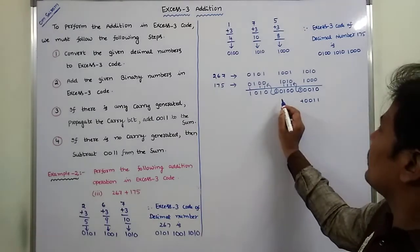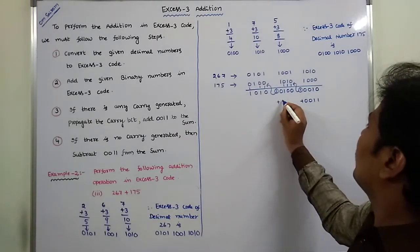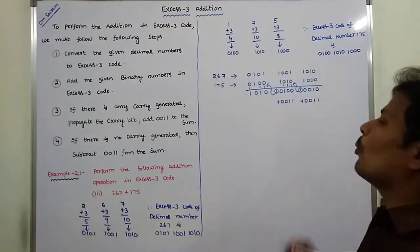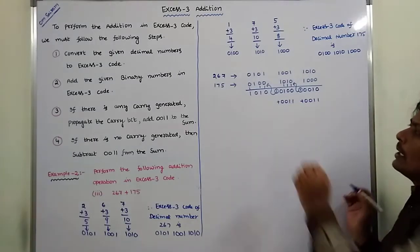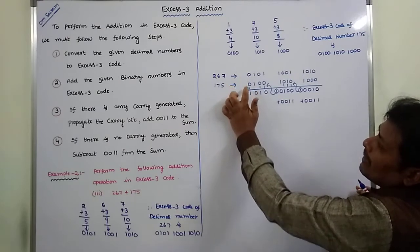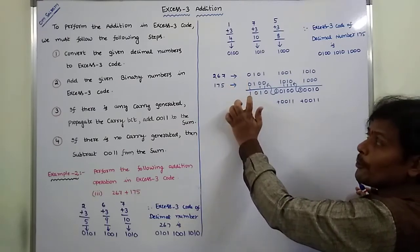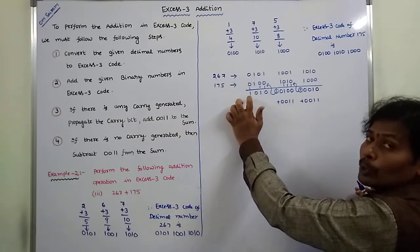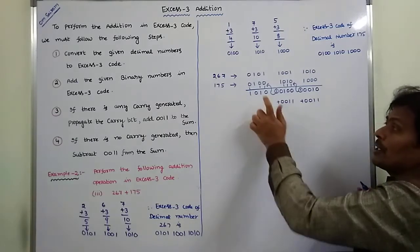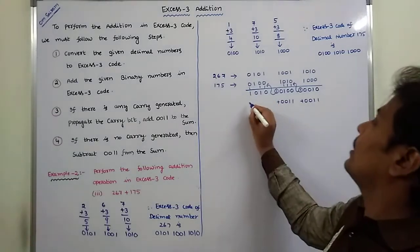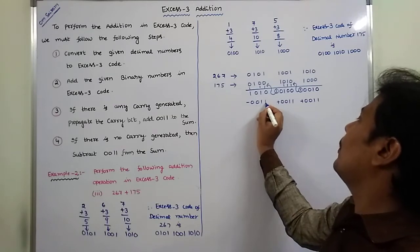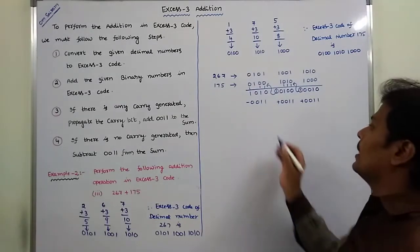For the next group: 0 plus 0 is 0, then 1 plus 1 gives 0 with carry 1, and that carry is forwarded to the next higher 4-bit group. A carry out is generated, so we need to add 0011 for that group. For the group where there is no carry out at the MSB position, we subtract 0011.